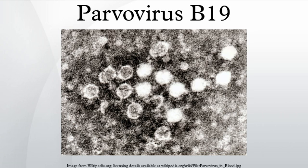Epidemiology: a significant increase in the number of cases is seen every three to four years. The last epidemic year was 1998. Outbreaks can arise especially in nurseries and schools. Parvovirus B19 causes infection in humans only; cat and dog parvoviruses do not infect humans. There is no vaccine available for human parvovirus B19, though attempts have been made to develop one.